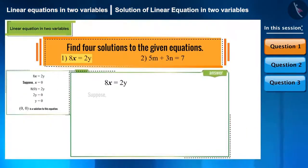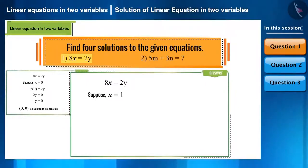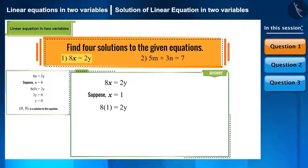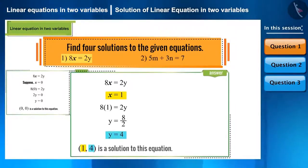Now, let's take the value of x as 1. By placing x as 1 in the equation 8x = 2y, we get a linear equation in one variable, and when we solve it, we get the value of y as 4. So, (1, 4) is another solution to this equation.